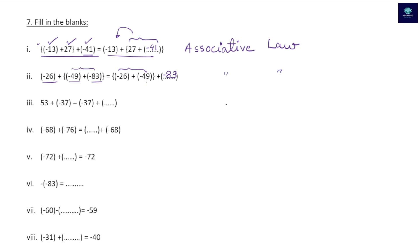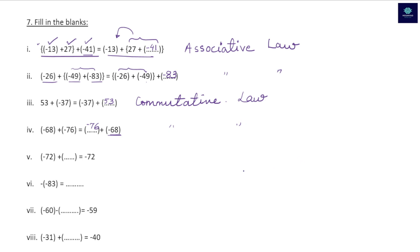Blank three: 53 + (-37) = (-37) + missing number. The missing number is 53, and the property followed is the commutative law of addition. Blank four: -68 + (-76) = -68 + missing. The order is changed, so the missing number is -76, again following commutative law.